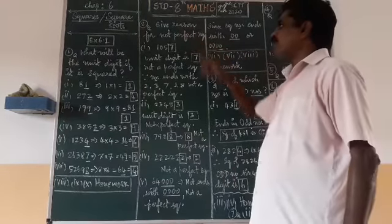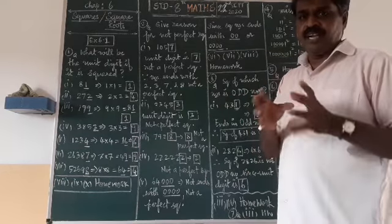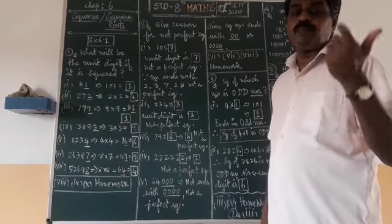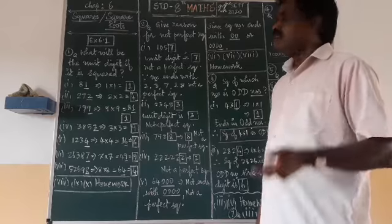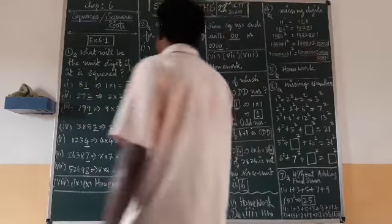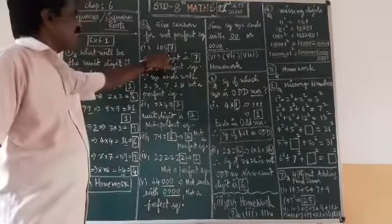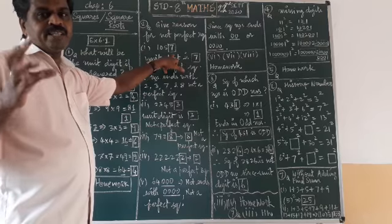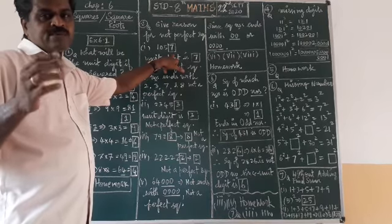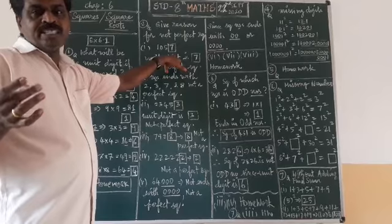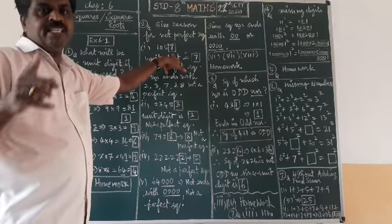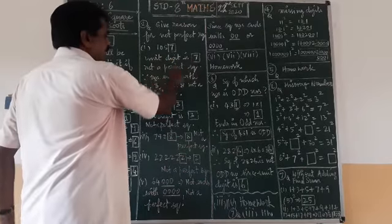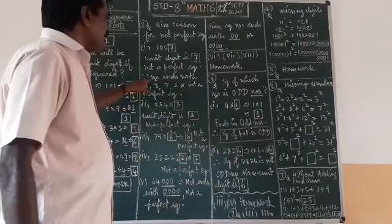The second question asks: give reasons why a number is not a perfect square. Some numbers are given and by seeing them you have to say it is not a perfect square number. For 1057: see the last digit. If any number ends with 2, 3, 7, or 8, it is not a perfect square number. The last digit of 1057 is 7, so it is not a perfect square.